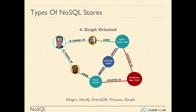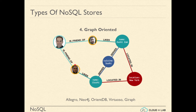The fourth category of NoSQL data stores is graph-oriented data stores. These are the most recent kind of data stores. Such NoSQLs are used for storing graphs. A graph is made up of complex relations between objects, for example, Facebook relations between people. Allegro, Neo4j, OrientDB, Virtuoso, and Giraffe are examples of such NoSQLs.